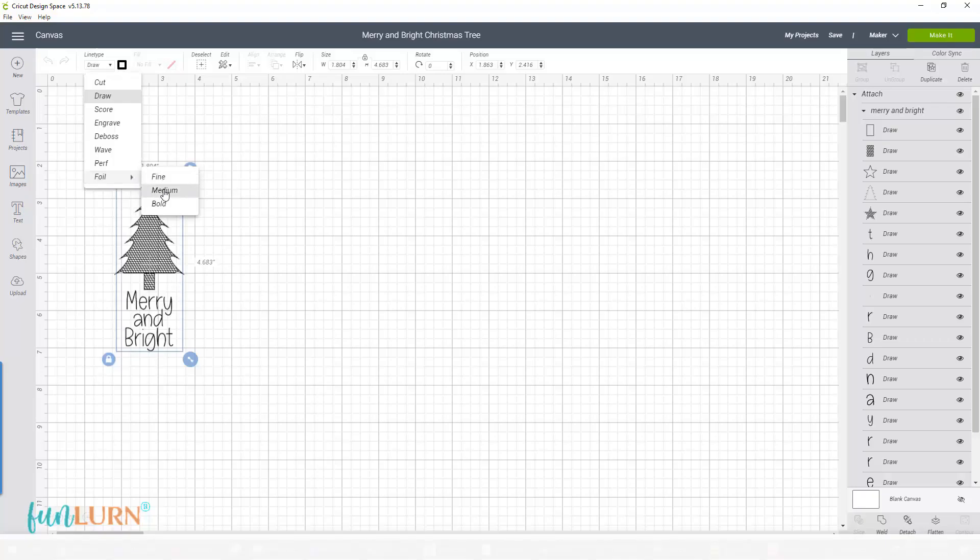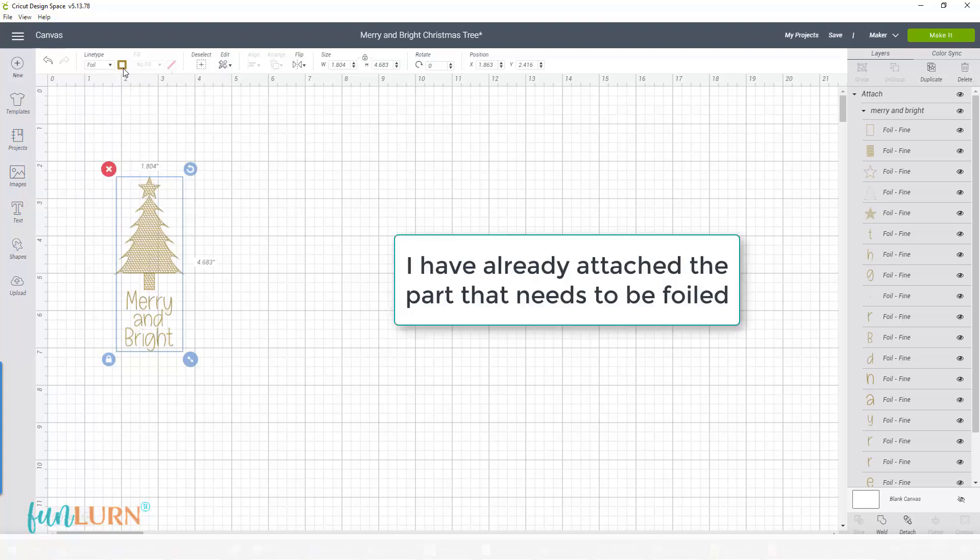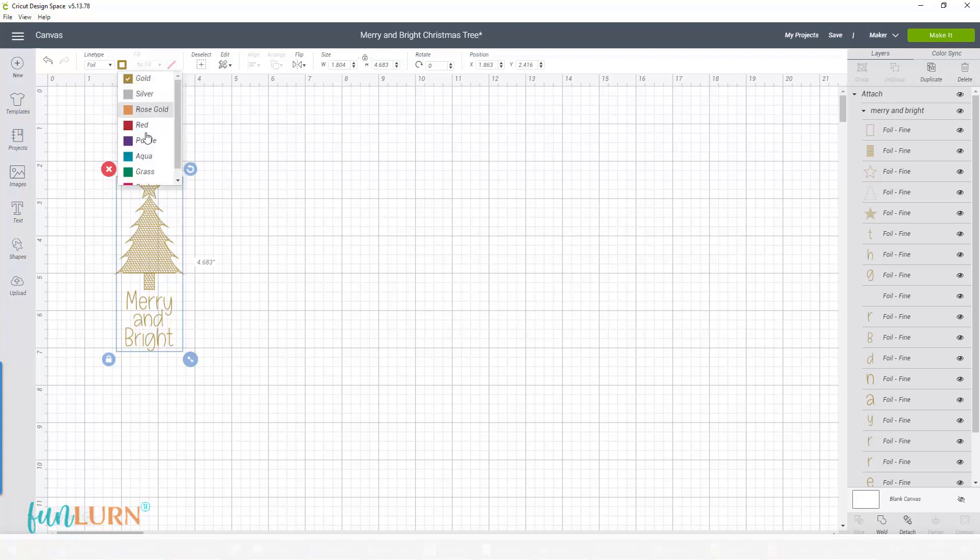I'll change the line type to foil. Which foil type does not matter because Cricut cannot read whether the correct tool is in its clamp. So I'll just go ahead and select Foil. The color can be changed from here. I'll just let it be golden because I'm going to foil with gold foil.